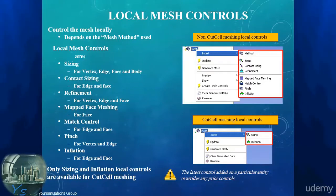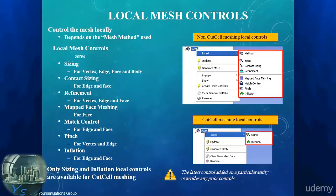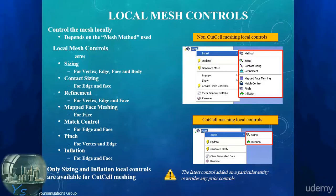The mapped face meshing creates a structured mesh on the selected surface, though not all surface shapes are compatible with that control. Match control is used to create conformal periodic boundary conditions in the solver. We already learned a bit about pinch control, which can be used to de-feature vertices or edges; details about this local control are covered in Lecture 8.